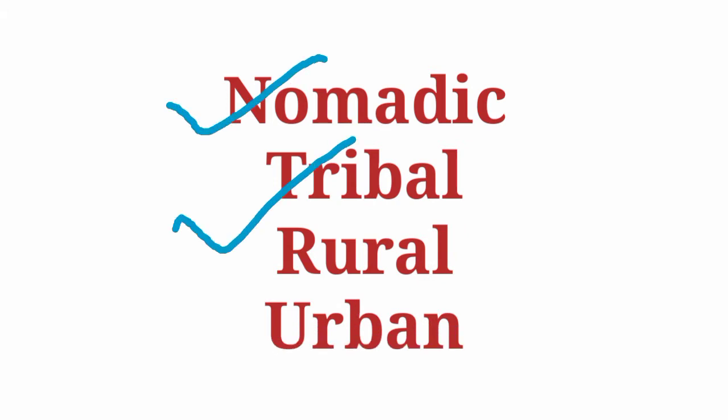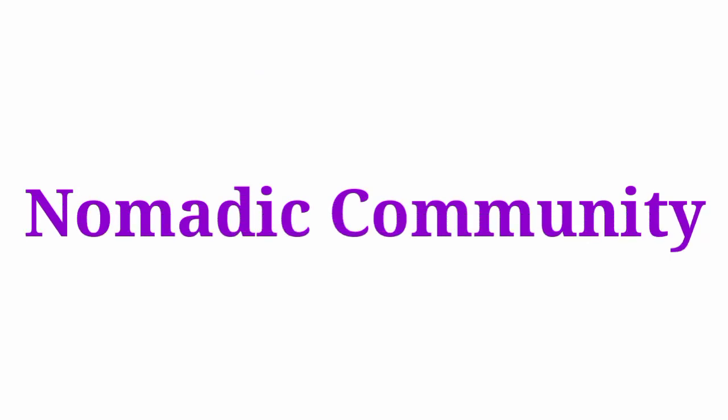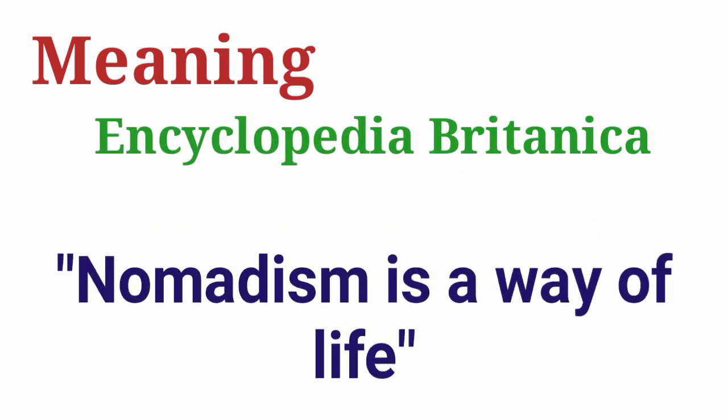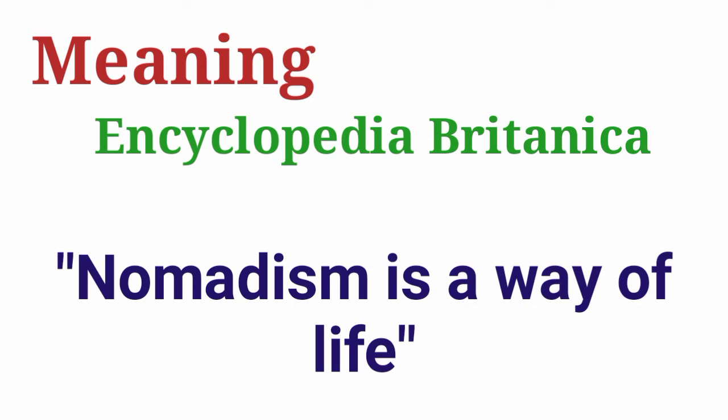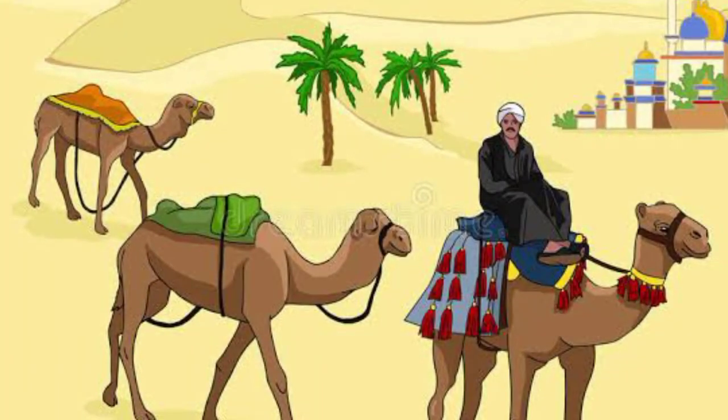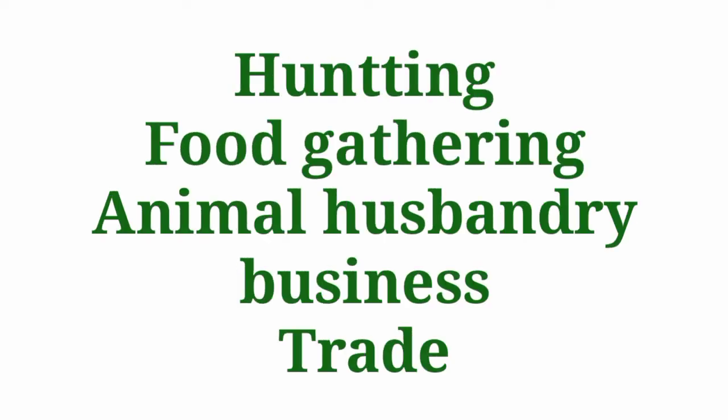In today's class we will see only two of them. Our first type of community is the nomadic community. According to the encyclopedia, nomadism is a way of life. A nomadic community is a group of people who wander from one place to another according to the season, for the purpose of hunting, food gathering, animal husbandry, and trade. This wandering is different from a migration process. Nomadism is called 'Sanchari' in Hindi.